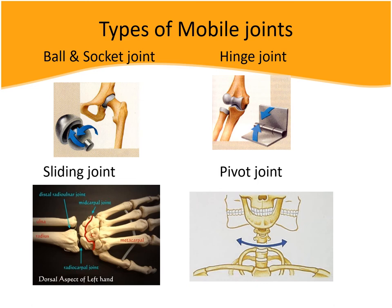The third type is the sliding joint — also called gliding joint or plane joint; they are the same. The example is the wrist joint; another example is the ankle joint. The fourth type of mobile joint is the pivot joint, found at the first and second bones of our neck. When we move our head in a side-to-side motion — the movement when we say 'no' — that movement between the first and second vertebrae of our neck is the pivot joint.